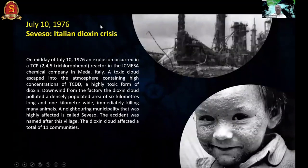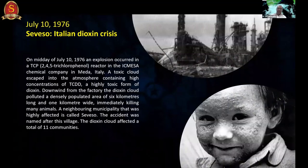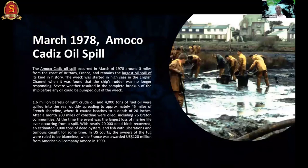The 1976 Seveso, Italy disaster involved an explosion in a reactor releasing 2,4,5-trichlorophenol, killing around 15,000 to 20,000 people across 11 communities. The impact of this chemical event continued for years on the affected population, not just as a one-time event.